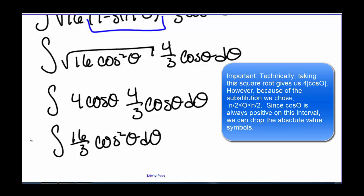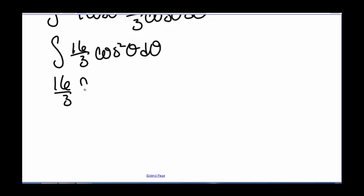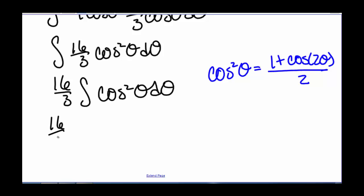We can pull out the 16 thirds, so we have 16 thirds times the integral of cosine squared theta d theta. And now we have a trigonometric integral, so we need to figure out how to solve this one. Remember the half-angle formula: cosine squared of theta equals 1 plus cosine of 2 theta, all divided by 2. Substituting that in, we get 16 thirds times the integral of 1 plus cosine of 2 theta, all over 2, d theta.